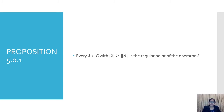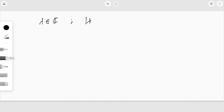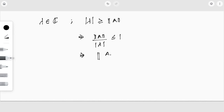Next we move to Proposition 5.0.1, which states that every complex number λ with |λ| ≥ ‖A‖, where A is the bounded operator mapping from X to X, is a regular point of the operator. Given any operator A and a complex number λ whose modulus is greater than or equal to ‖A‖, we can prove that λ is a regular point.